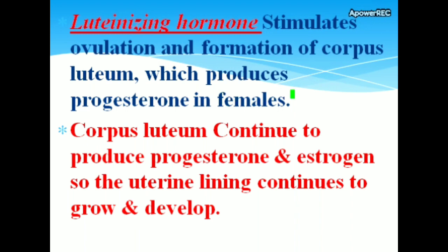The corpus luteum continues to produce progesterone and estrogen, so the uterine lining continues to grow and develop.